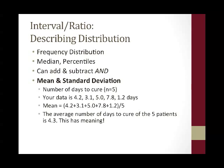With interval ratio data, you can do all the other types of measures of central tendency and dispersion as we saw with nominal and ordinal data, including frequency distribution, median, percentiles, and mode. They can also be added and subtracted, and therefore you can calculate a mean and a standard deviation.